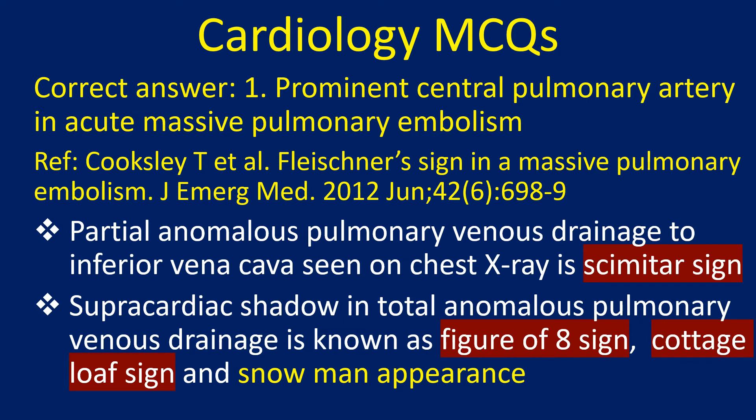Partial anomalous pulmonary venous drainage to inferior vena cava seen on chest X-ray is scimitar's sign. Supracardiac shadow in total anomalous pulmonary venous drainage is known as figure of 8 sign, cottage loaf sign, and snowman appearance.